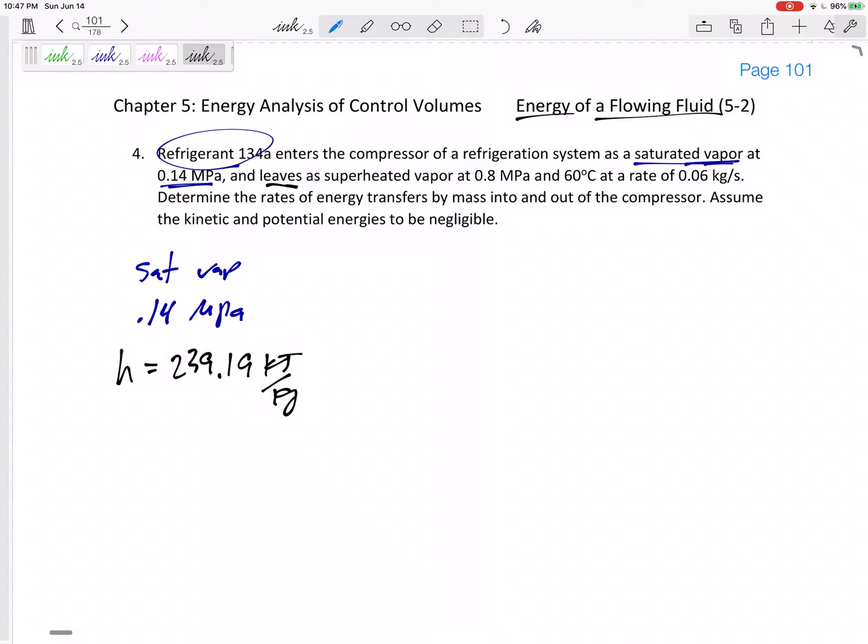And it leaves as a superheated vapor, 0.8 MPa, 60 degrees C. So let's go back and look at this one. This one would have been table, let's see, it's refrigerant. So either 11, 12, 13, this would be table A12, right? This would be table A13. See if we would get an H of 296.82 kilojoules per kilogram.